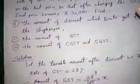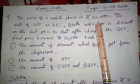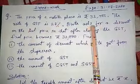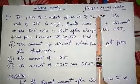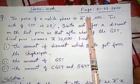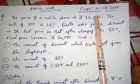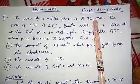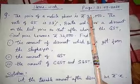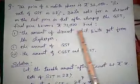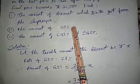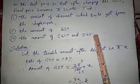One more question: the price of a mobile phone is Rs. 32,000 and GST is 28%. Binita asks for a discount on the list price so that after charging GST, the final price becomes Rs. 32,000. She is saying: give me a discount and I will pay GST, and my total payment including both should be Rs. 32,000. We need to find the discount, GST, CGST, and SGST.